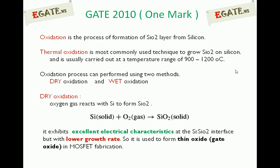In dry oxidation, oxygen gas reacts with silicon to form a silicon dioxide layer. The equation is: Si + O₂ → SiO₂. Silicon dioxide is a solid and exhibits excellent electrical characteristics at the silicon-silicon dioxide interface, but with a lower growth rate. It is used to form thin oxide, that is, the gate oxide in MOSFET fabrication. Gate oxide is the oxide residing between the gate and channel, which is very thin and acts as a dielectric material for the MOS capacitor.